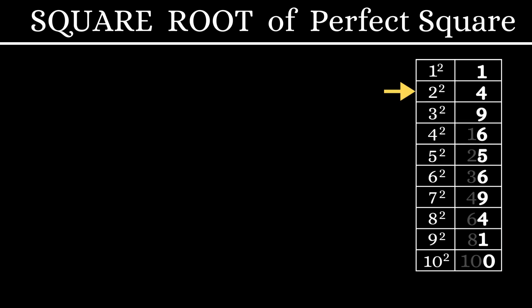2 squared and 8 squared have the units digit of 4. Similarly, 3 squared and 7 squared have the units digit of 9. 4 squared and 6 squared have the units digit of 6. 5 squared will have the units digit of 5 and 10 squared will have the units digit of 0.